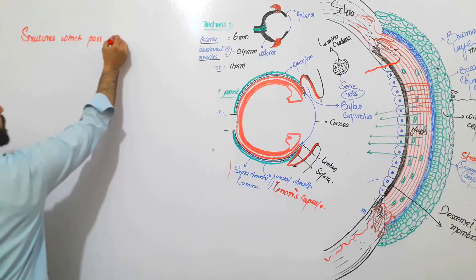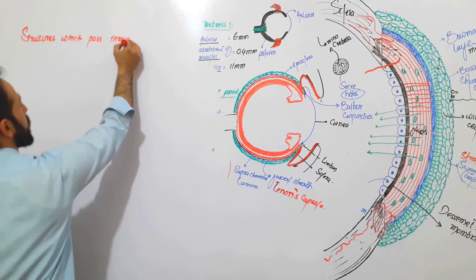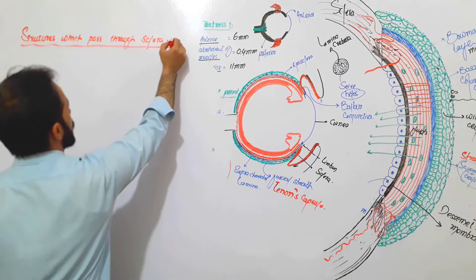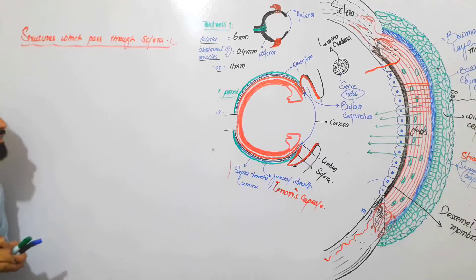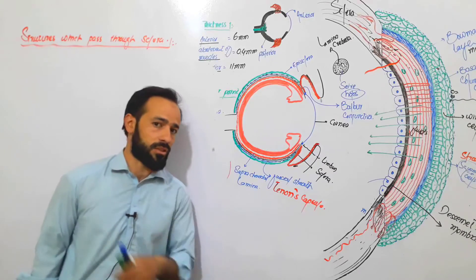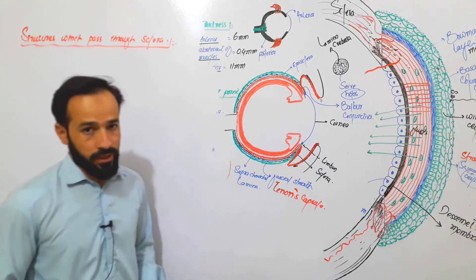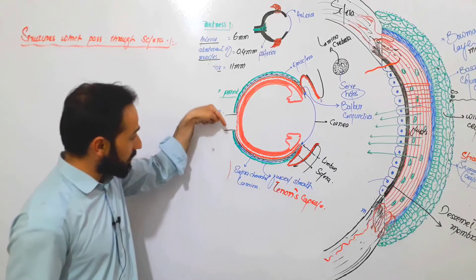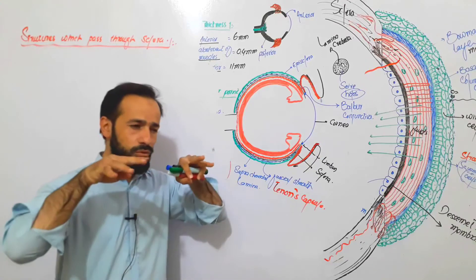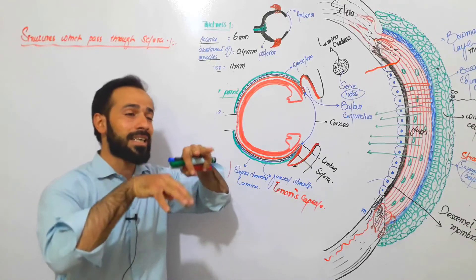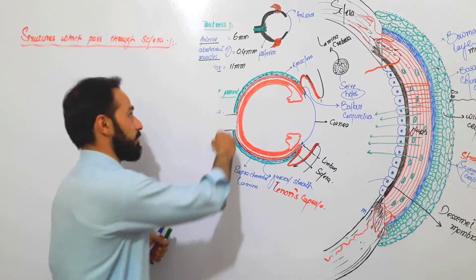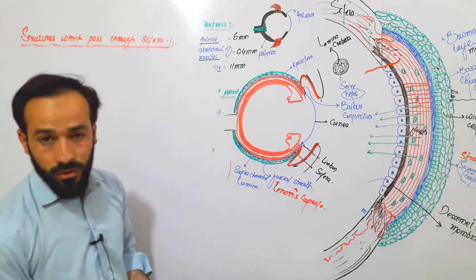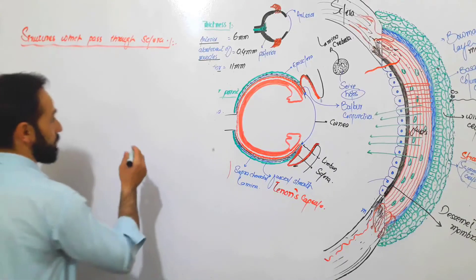One very important thing to note is that the sclera is avascular — it does not itself contain any artery or vein. Rather, it has small pores through which blood vessels can pass through it and reach the important points where blood supply is given to the eye. So let's look at what structures are passing through the sclera.